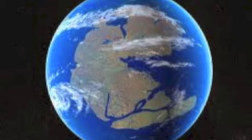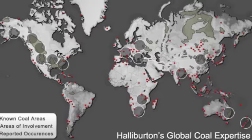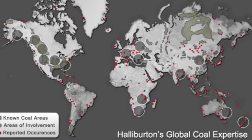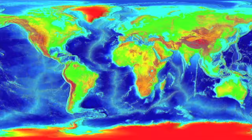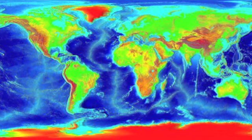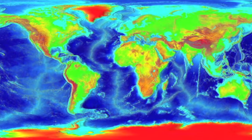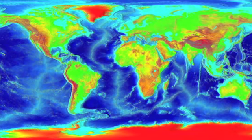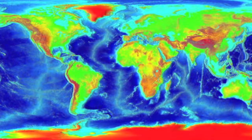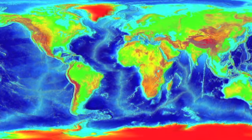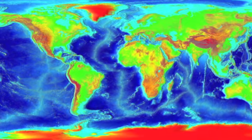Wegener provided much evidence as to how the different continents were once together. One piece of evidence was matching coal beds in North America and Europe. Another piece was similar mounds in North America, Africa, and South America with equally aged rock. His last piece of evidence was four different fossils, each found on at least two different continents.